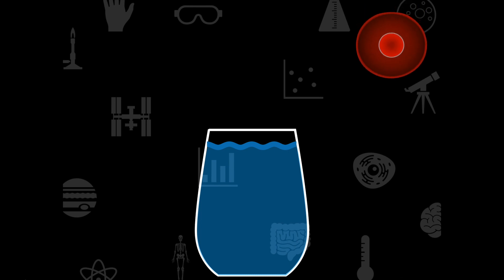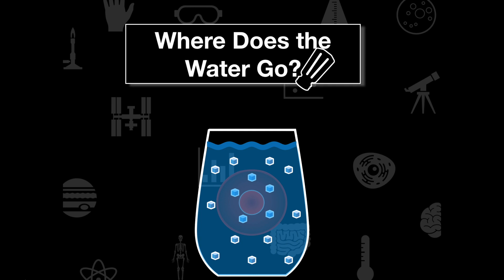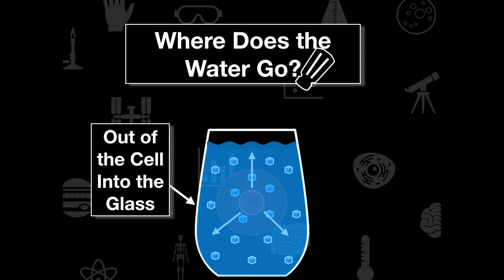Now let's look at a different scenario. Take the same cell with the same amount of salt particles, but now add salt to the water. Which way does the water move? The water moves out of the cell because there are more salt particles outside than inside. Again, we're trying to equalize that ratio. All of the water moves out of the cell and into the surrounding solution because there are more salt particles in the water surrounding the cell.